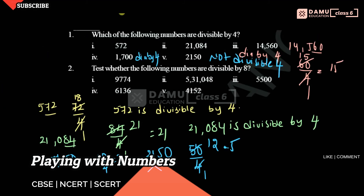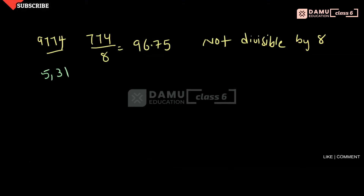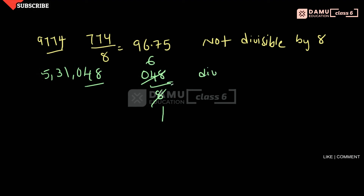The next value is 5,310,048. The last three digits are 048. Is 048 divisible by 8? 8 times 6 is 48, so yes, it divides evenly. Therefore, 5,310,048 is divisible by 8.